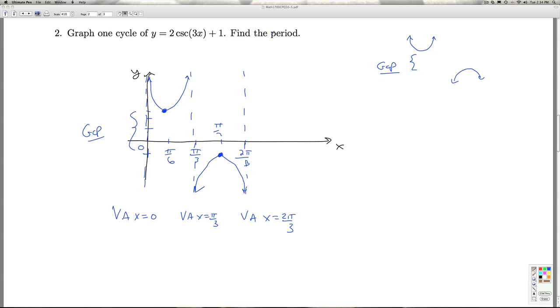As far as the period is concerned, the period is the length of the interval over which we can graph one cycle. The interval we're graphing over is 0 to 2π/3. So I take the right endpoint, 2π/3, minus the left endpoint, 0, which gives me 2π/3. That'll do it for number 2.